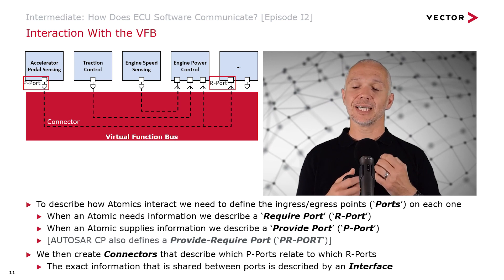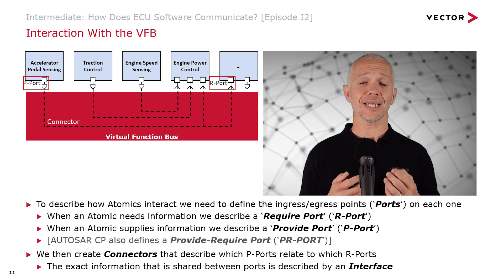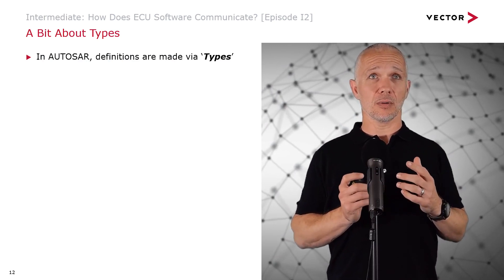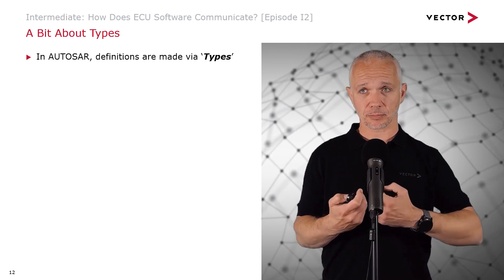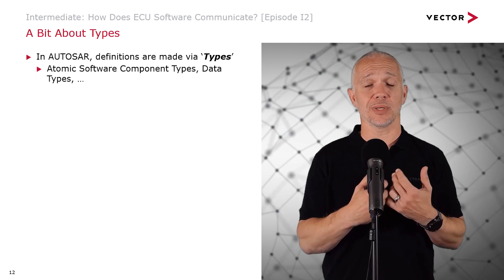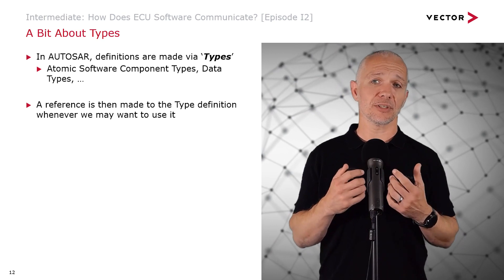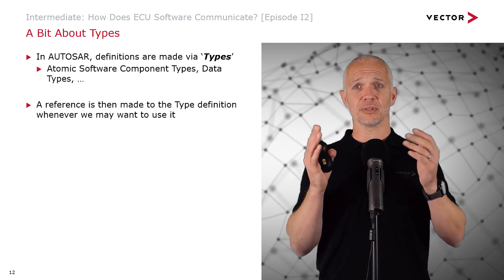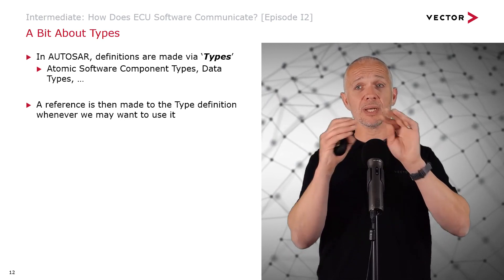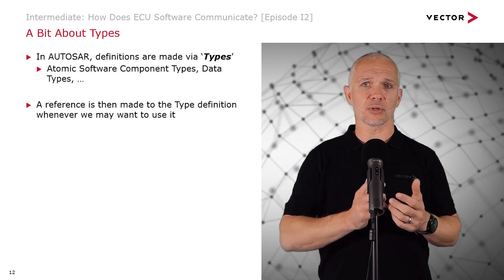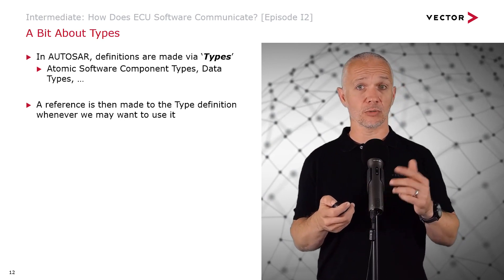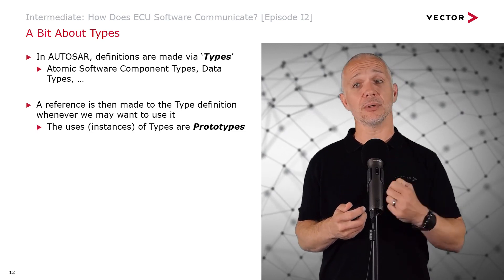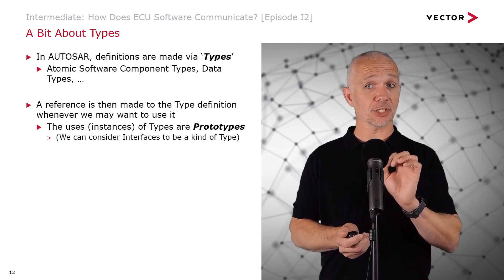The exact information that we want to share between ports is then described according to an interface. This is a good time to talk about types, because in AUTOSAR most, if not all, definitions are made via a concept of type. We have things such as atomic software component types and data types, and a reference is made to the type definition wherever we want to use it. This means we define something once and then refer to it when we want to use it - so we don't end up with two slightly different definitions of vehicle speed. We define vehicle speed one time and use that wherever needed, avoiding integration problems. The uses or instances of types are known as prototypes, and we can consider interfaces to be a special kind of type.